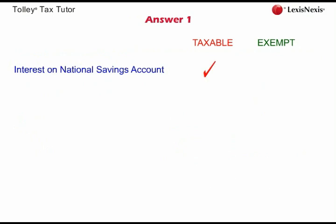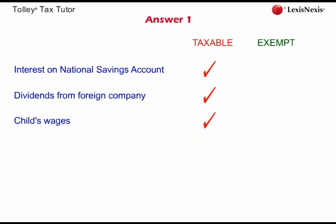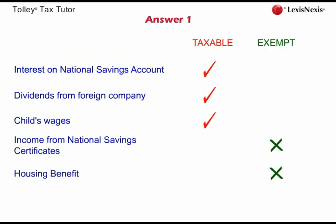Interest on a national savings account is taxable and is categorised as interest income. Dividends from a foreign company are also taxable — remember that just because the income arises outside the UK, it will still be taxable. Wages are taxable as employment income; the fact that they are paid to a child is irrelevant, however in most instances the income will be covered by personal allowances, as we shall look at in the next session. Income from national savings certificates is exempt — make sure you differentiate between this and other national savings products, income from which is generally taxable. Housing benefit is exempt. However, the state retirement pension is taxable income and is one of the handful of social security benefits which is not exempt from income tax.